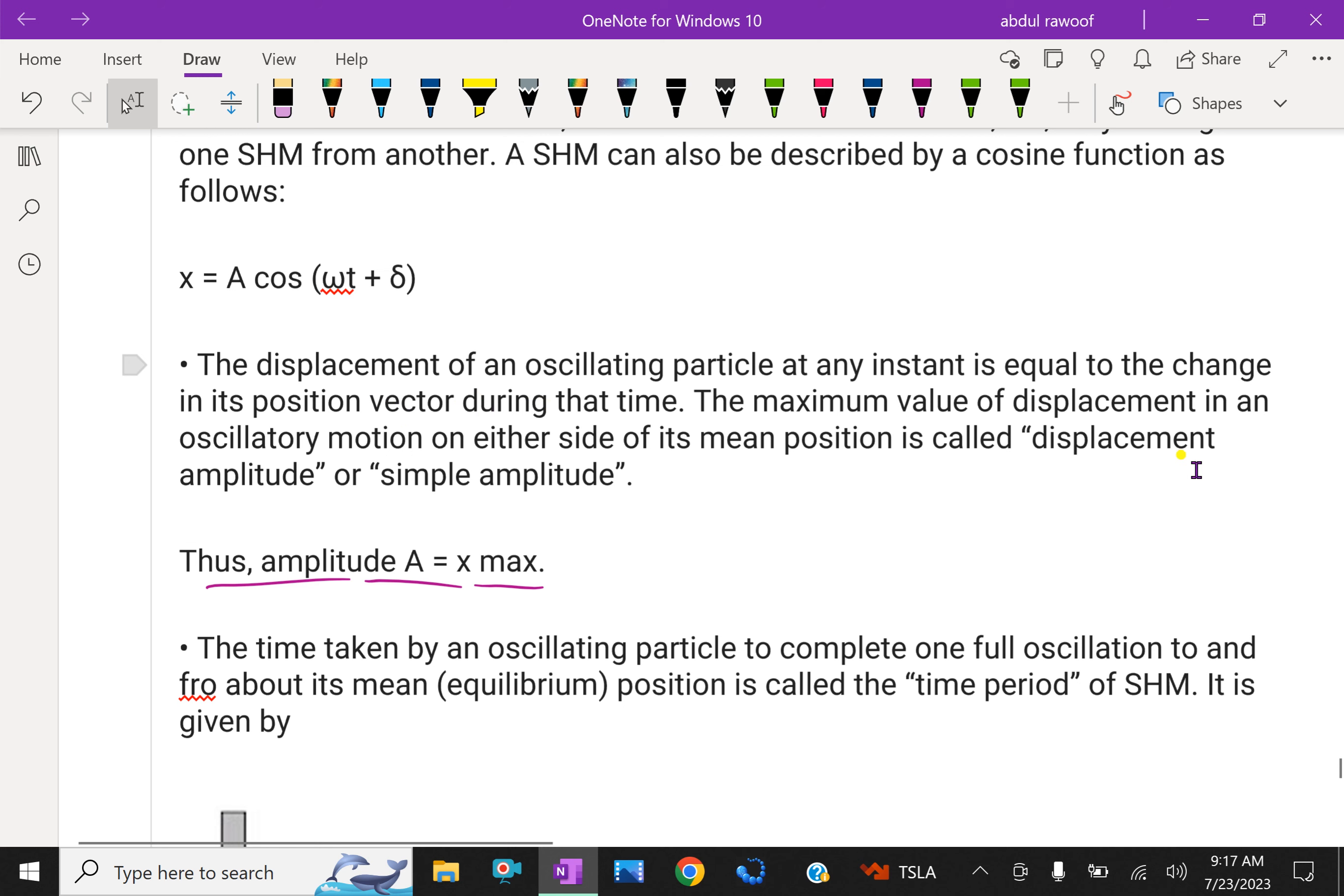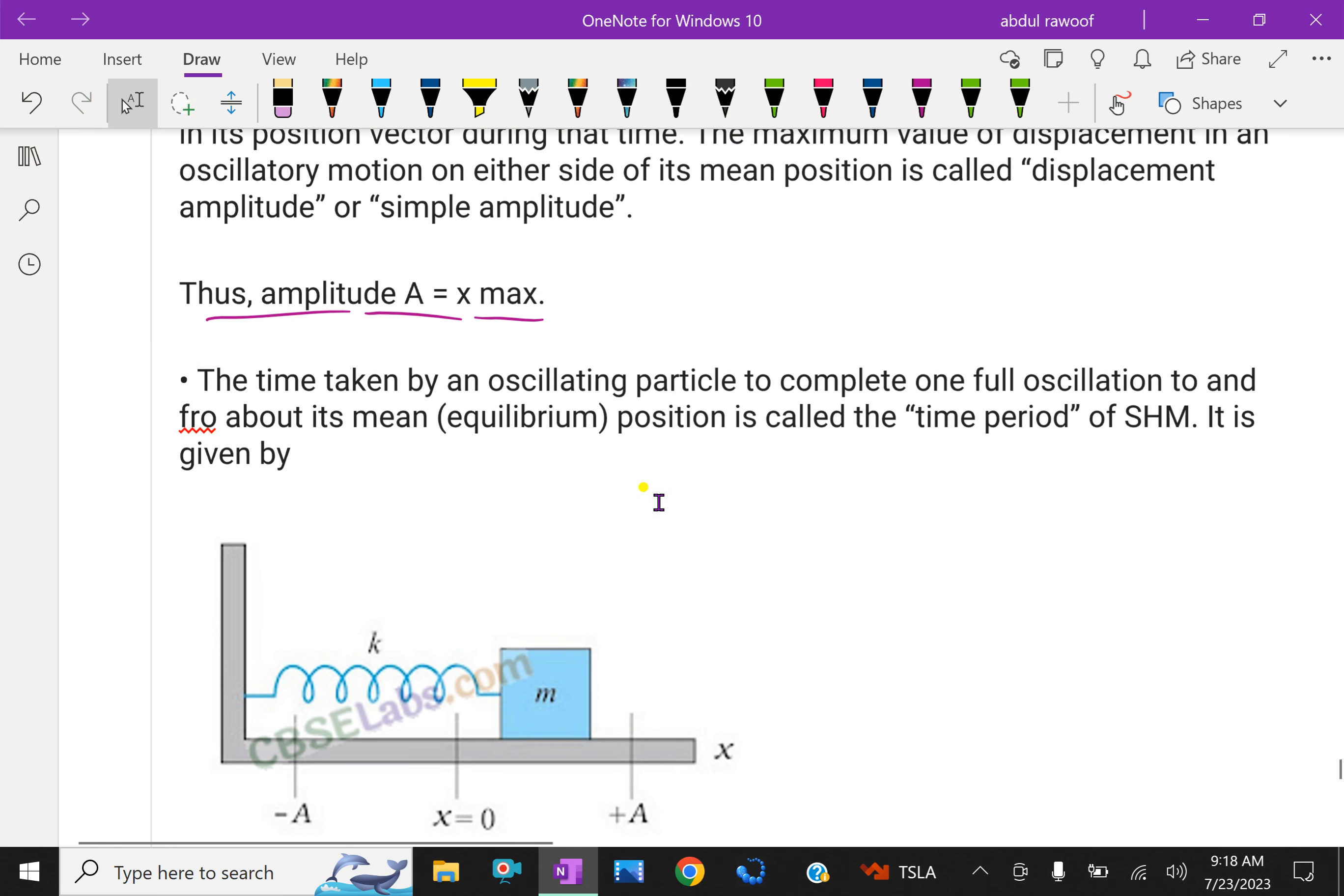The maximum value of the displacement in an oscillatory motion on either side of the mean position is called displacement amplitude, or simply amplitude. That means from mean position to the extreme position the horizontal distance is an amplitude. The amplitude A equals x maximum.